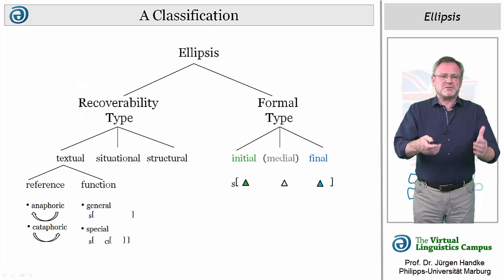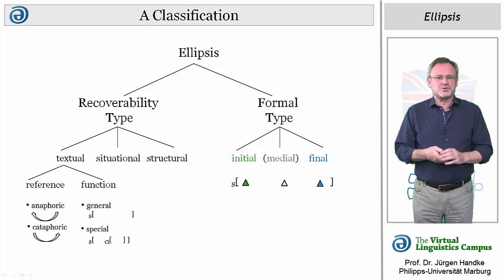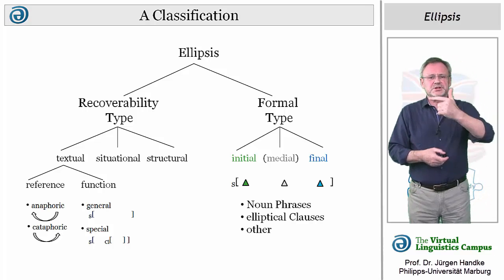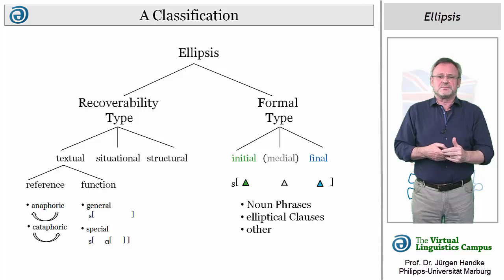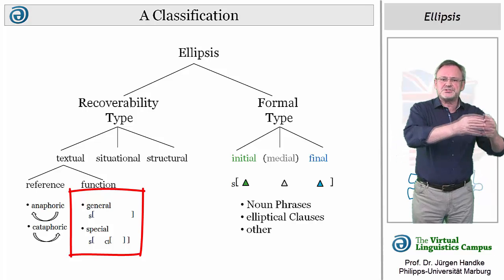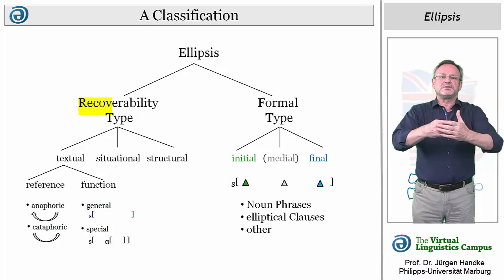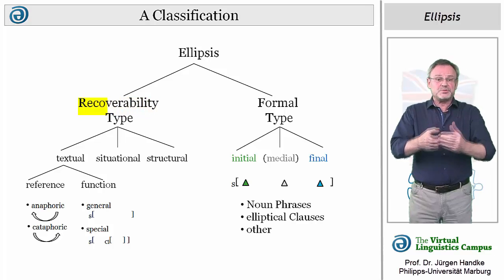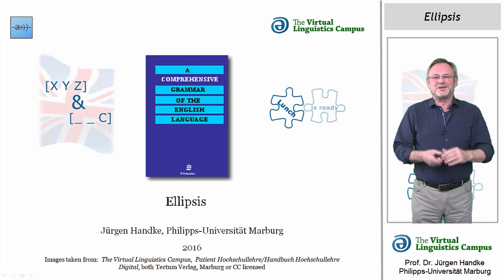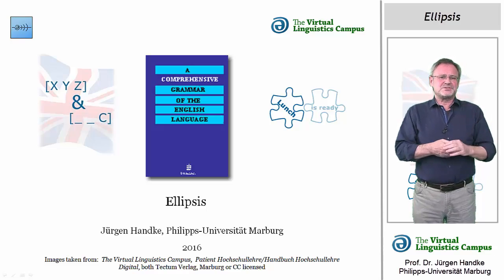Beyond the simple subdivision into formal and recoverability types, there are further issues that can be discussed in the context of ellipsis. For example, we could distinguish formal categories such as noun phrases, elliptical clauses, and other constructions. We could discuss the relevance of the functional relation between the elliptical and antecedent construction, or we could define even degrees of ellipsis on the basis of the precision with which we can recover the missing elements. However, I will stop here and postpone these details about ellipsis to further practical videos where you can apply and test your knowledge.